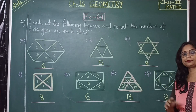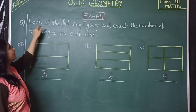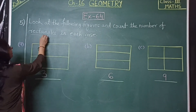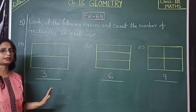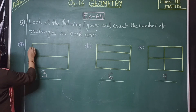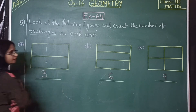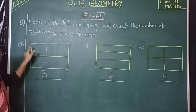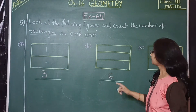This is the last question of Exercise 64. Look at the following figures and count the number of rectangles. In the first figure, counting: one, two, three — total rectangles are three.